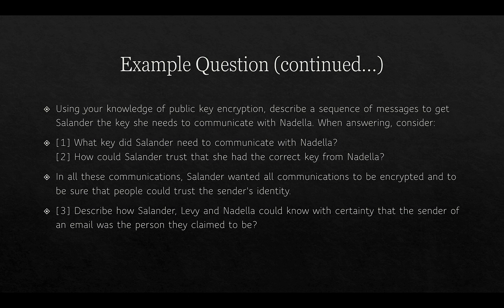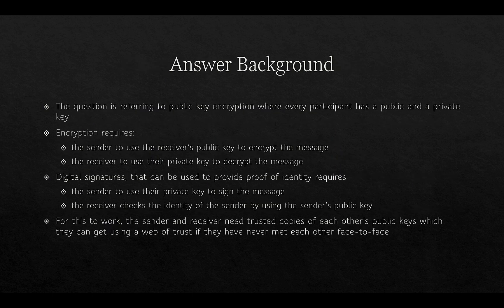The key things here are that we're being asked to consider public key encryption and describe how that essentially works, then work out what keys they need to have to communicate with each other, and given they have never met, how they can do that using a third party — Stephen Levy. The background is that in public key encryption every participant has a public and a private key. Encryption requires that the sender uses the receiver's public key to encrypt the message, and the receiver uses their private key to decrypt it. Digital signatures, on the other hand, can be used to provide proof of identity — they require that the sender use their own private key to sign the message, and the receiver can check the sender's identity by using the sender's public key.